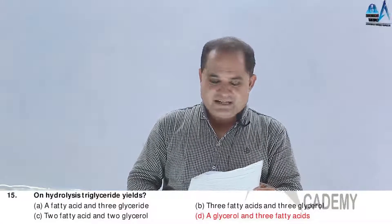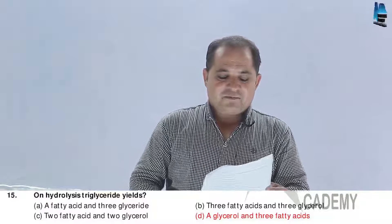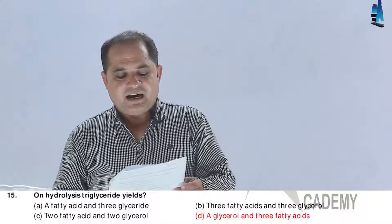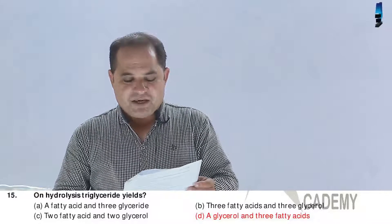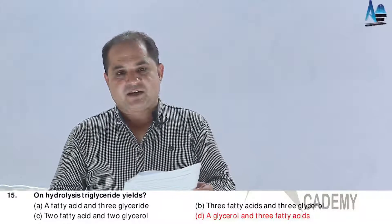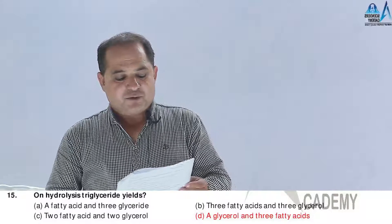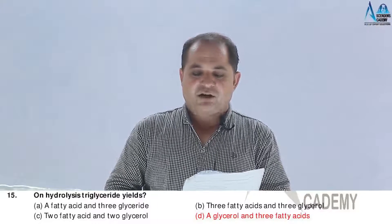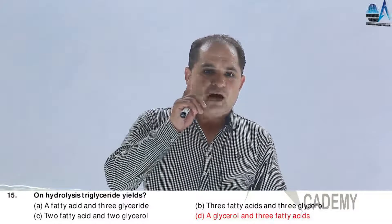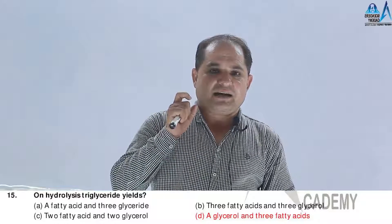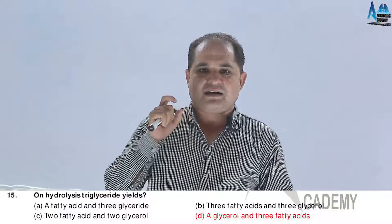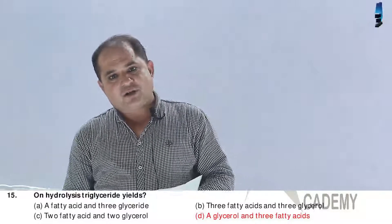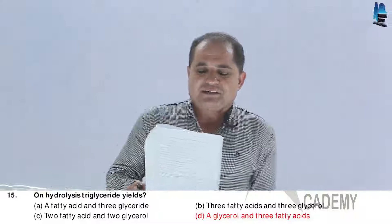Question number 15. On hydrolysis, a triglyceride yields: A, one fatty acid and 3-glycerol; B, 3 fatty acids and 3-glycerol; C, 2 fatty acids and 2-glycerol; D, one glycerol and 3 fatty acids. In a triglyceride — a triacylglycerol molecule — it yields one glycerol and 3 fatty acids. Answer should be D.